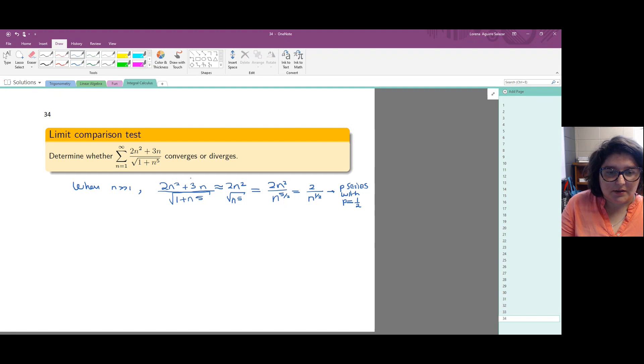And this process of saying that our nth term is roughly the same as 2 over n to the 1 half is justified by using the limit comparison test.